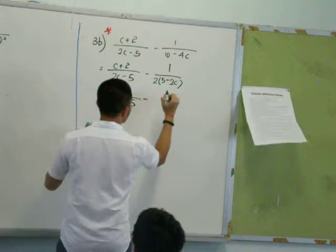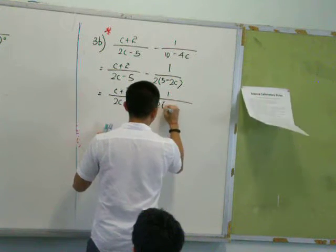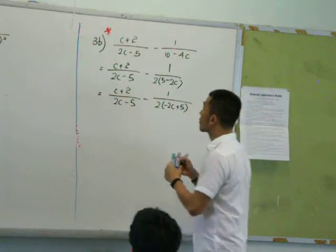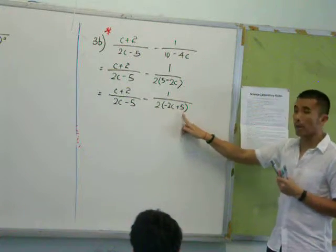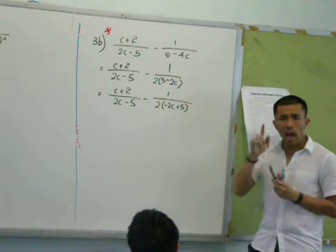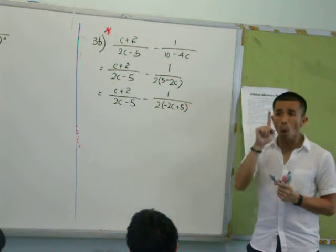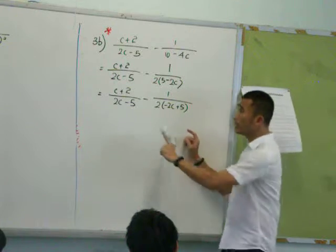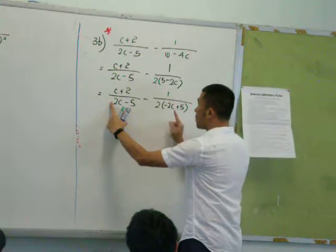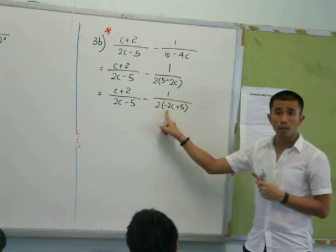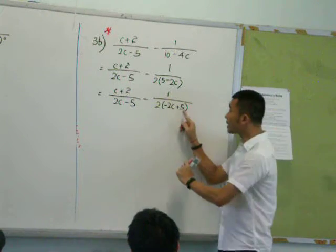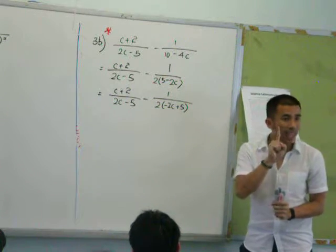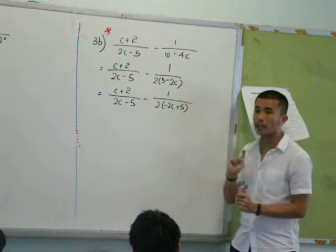Okay, I write in the same order. Let me write 2c first. But this is negative 2c plus 5. This is 2c minus 5. I want to make sure they are the same. The only thing that is different is the sign. Do you agree? This is positive 2c, but this is negative 2c. This is positive 5, but this is negative 5. The numbers are the same, but the signs are different. How can I make this sign the same?